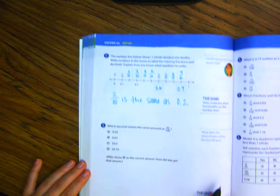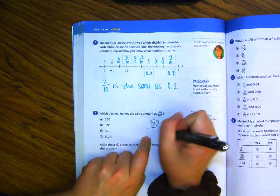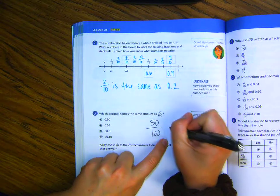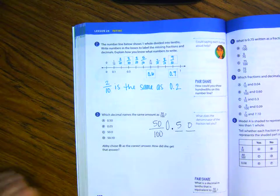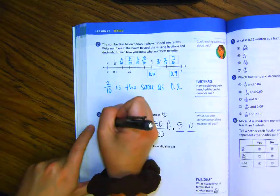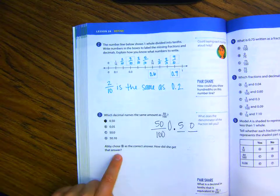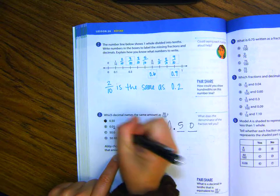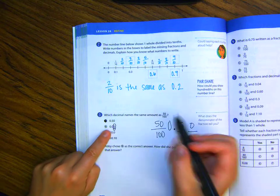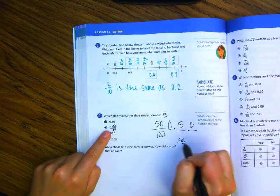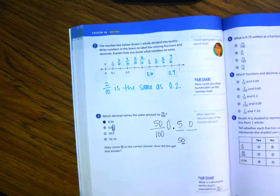Let's look at three on page 552. Which decimal names the same amount as fifty-hundredths? So, here's my tenths, and then here's my hundredths. So, I just write fifty-hundredths. And, that would be A. And, it says, Abby chose B as a correct answer. How did she get that answer? So, she put the five in the hundredths place value. That's correct. But, it needs to be fifty. So, fifty, the number ends with a zero to make it fifty. And, that's what needs to be in the hundredths place. So, she just got her five mixed up.